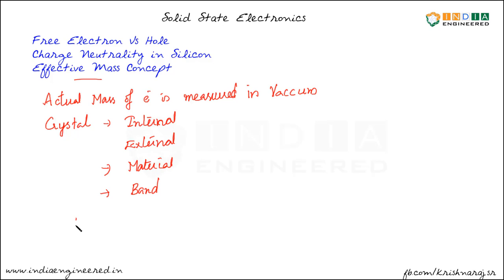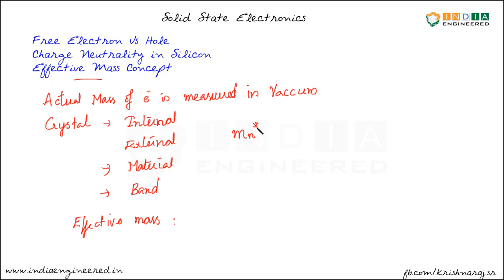The effective mass also varies with the energy band we are looking at. In order to accommodate these forces, we encapsulate that information into the concept of effective mass. Instead of dealing with internal and external forces every time we do a calculation, we summarize that information into effective mass — it accounts for the interactions experienced by electrons or holes in the crystal. Electrons and holes experience different sets of forces since they are in two energy levels: conduction band and valence band. The effective mass of an electron uses the notation mn* — where n represents negative charge and the star indicates this is not the actual mass but the effective mass.